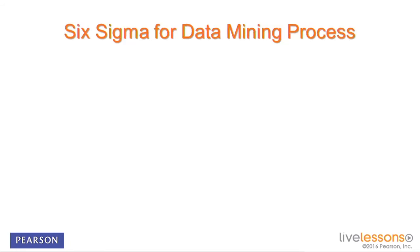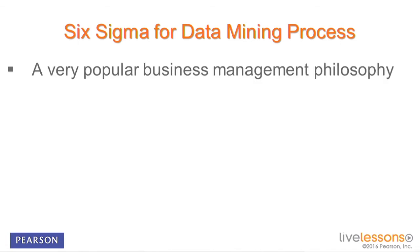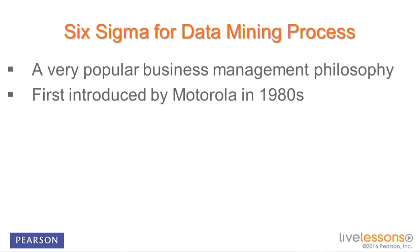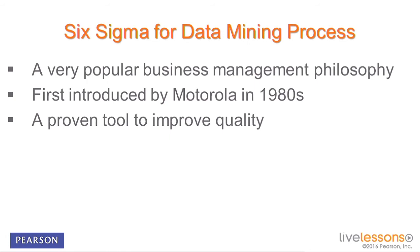The second process we want to discuss is Six Sigma for data mining. Six Sigma is a very popular business management philosophy — there is even a derivative called Nine Sigma that goes beyond it. Sigma represents variation, and Six Sigma means everything you do should fall within Six Sigma limits, meaning undesirable outcomes should be minimized to very close to zero. It was first introduced by Motorola in the 1980s for quality initiatives and has since been proven to significantly improve quality outcomes. It promotes zero defects and zero tolerance.